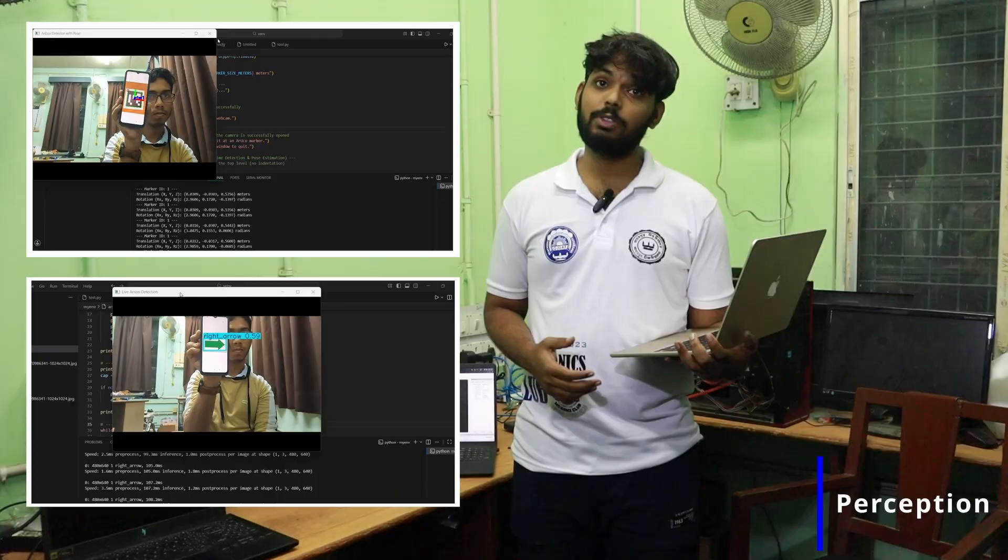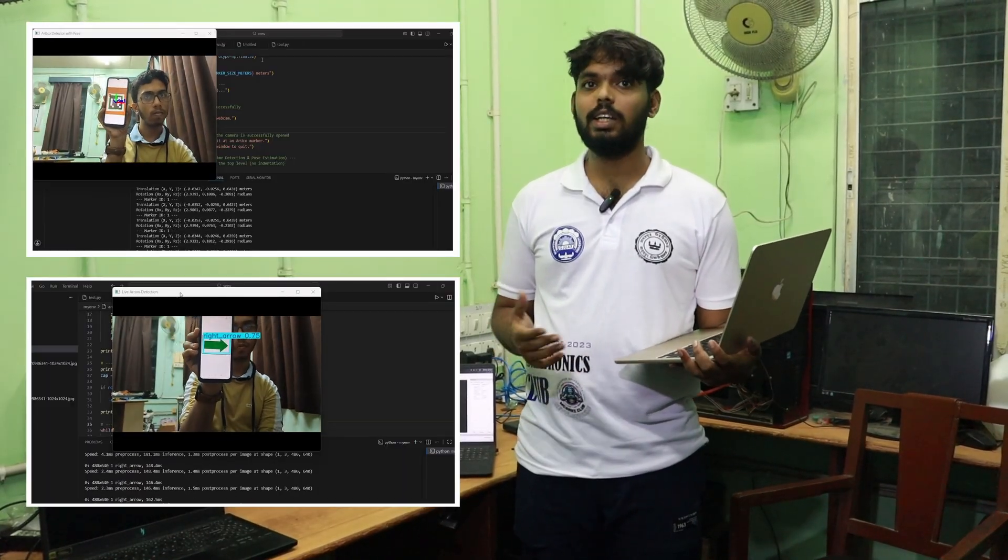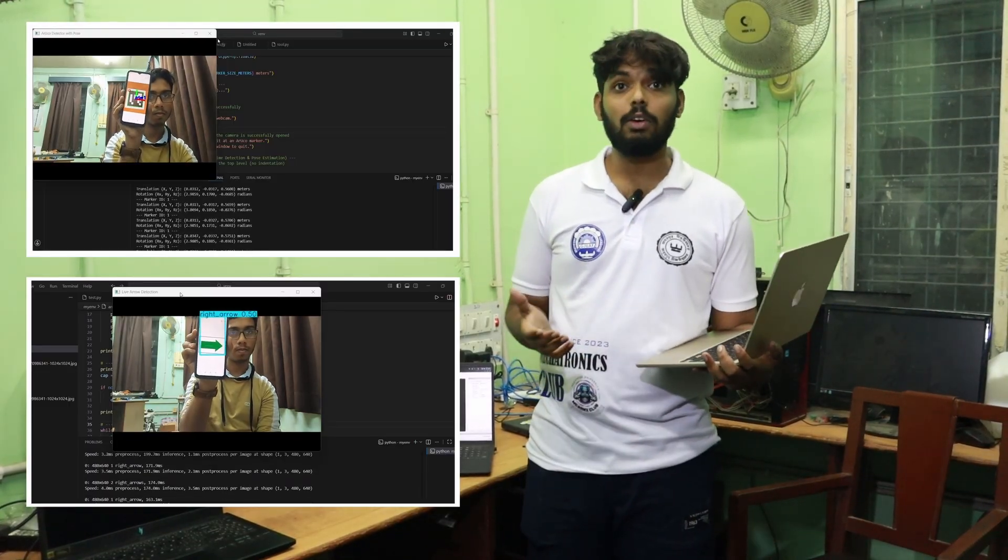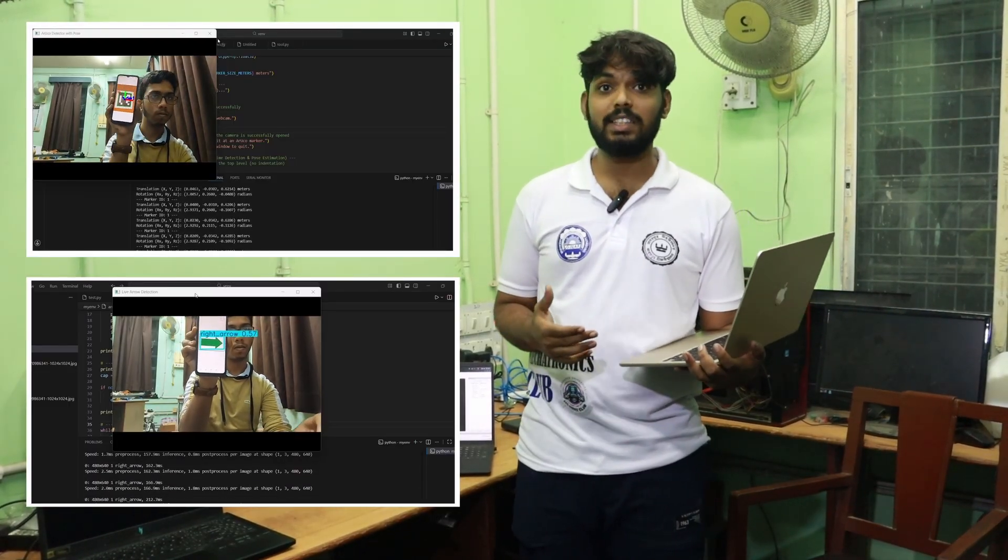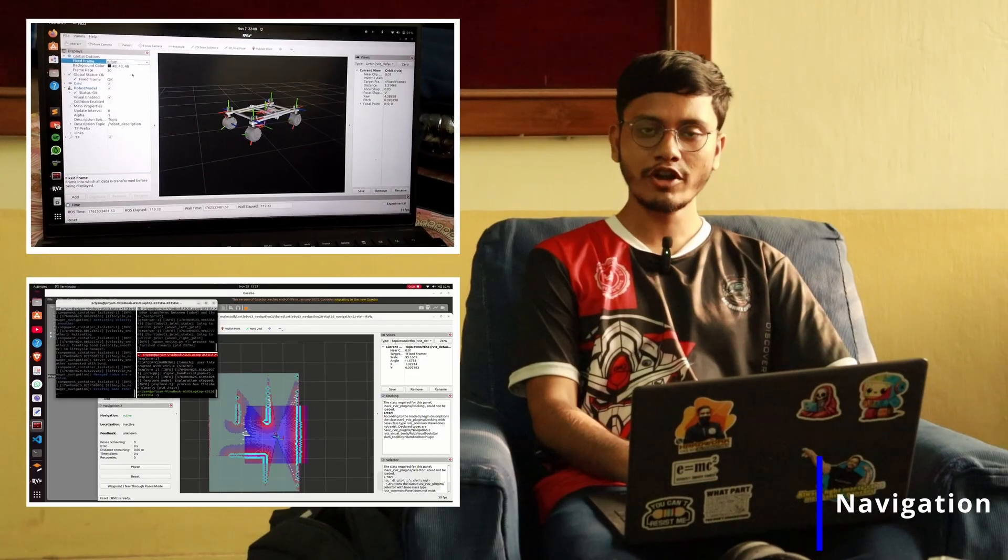For perception, we use a YOLO model optimized with knowledge distillation to detect objects instantly. We also use ArUco markers for autonomous navigation, allowing the rover to calculate its precise 6D pose and correct orientation drift in real-time.